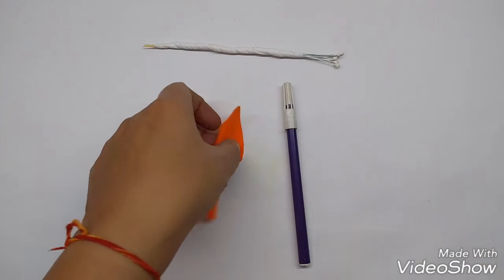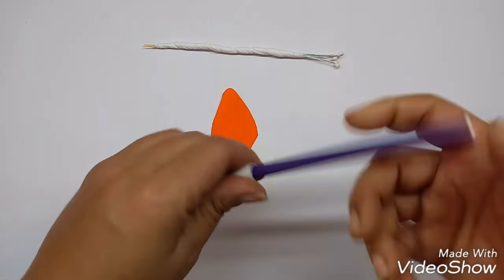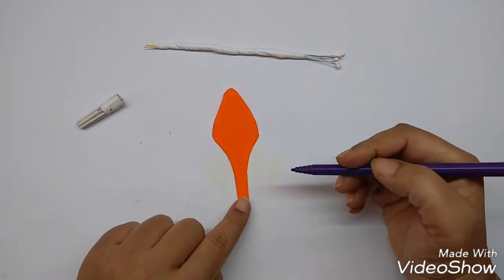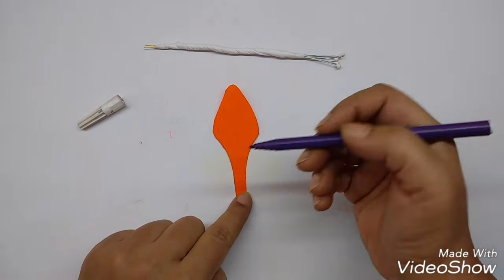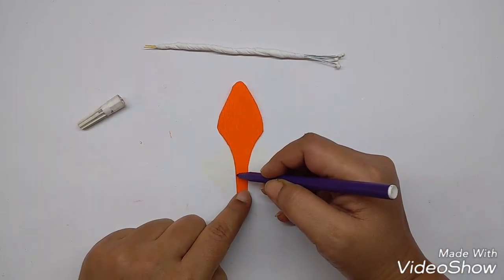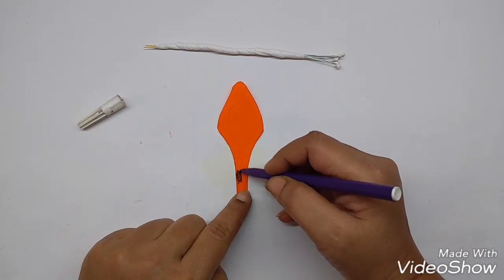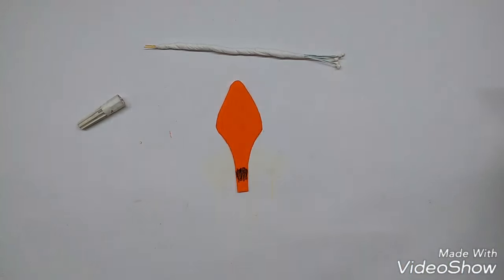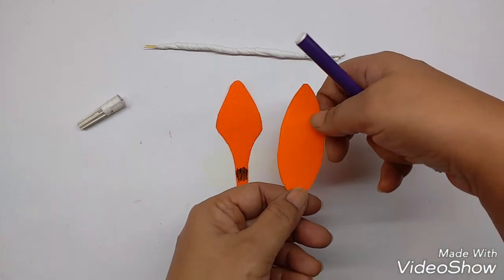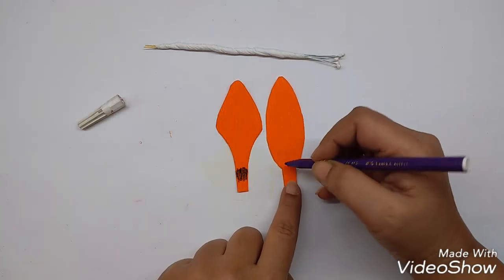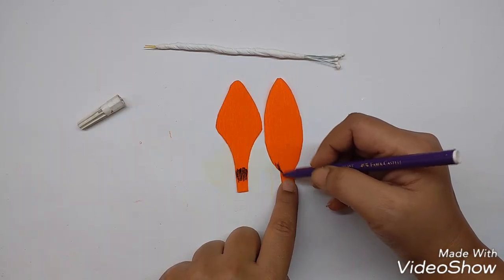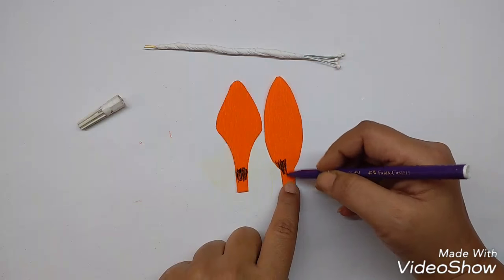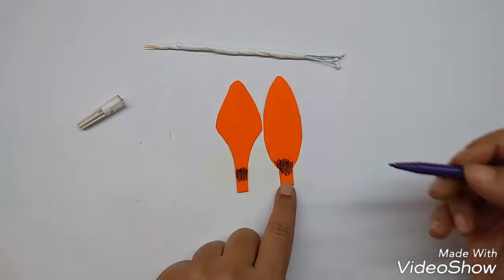Take a petal. And leaving about 1 cm from the base, use the purple color pen and just color it. And take the second shape of the petal also. And in the same way, just color the base area.